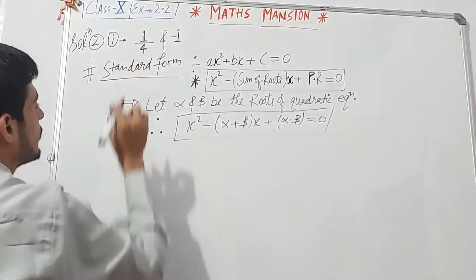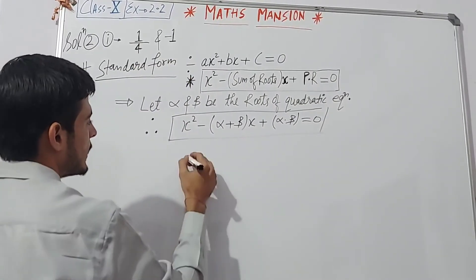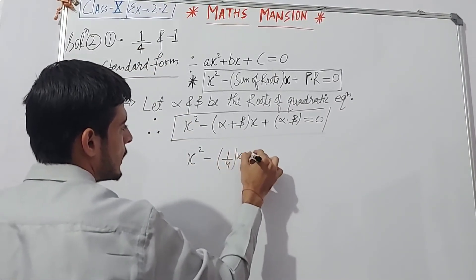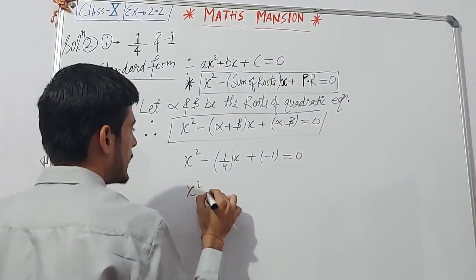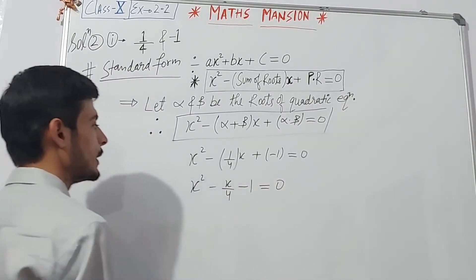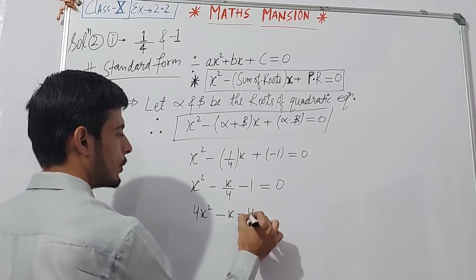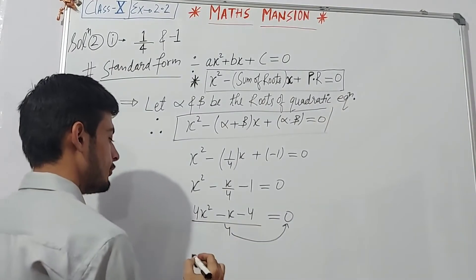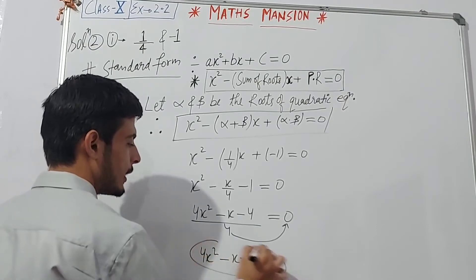In part 1, we are given that 1/4 is the sum of the roots and minus 1 is the product of the roots. Putting all these values in the equation, we get x² minus (1/4)x plus (−1) = 0, which gives x² − x/4 − 1 = 0. Taking LCM, we rewrite this as (4x² − x − 4)/4 = 0. Bringing the 4 to the right-hand side, our final answer is 4x² − x − 4 = 0.